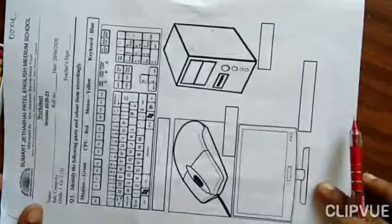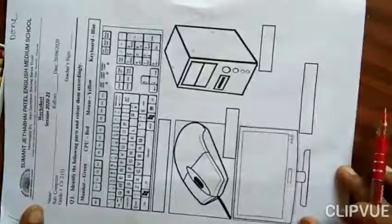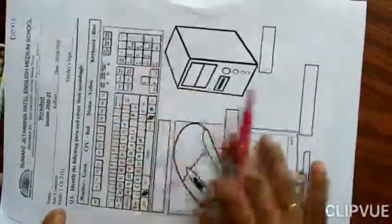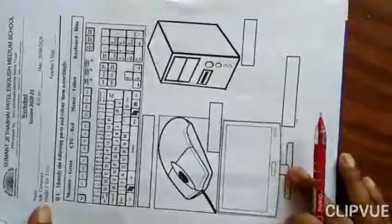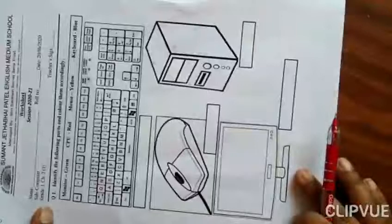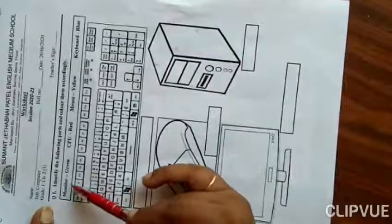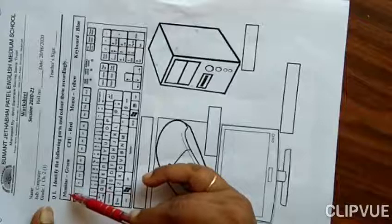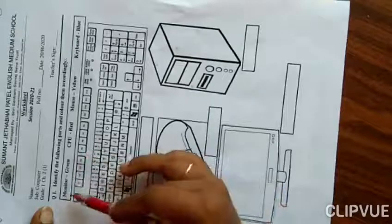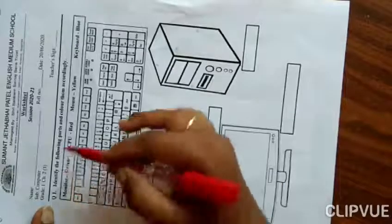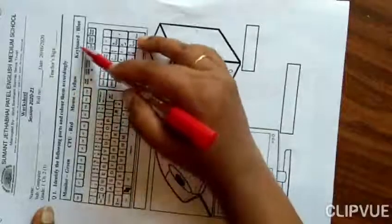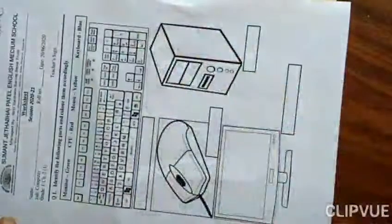What is the first question? Identify the following parts and color them accordingly. Here some pictures are given of parts of computer. In a box there are parts of computer and in front of them a color name is given. Monitor you have to color with green color, CPU with red color, mouse with yellow color and keyboard with blue color. Let's start.